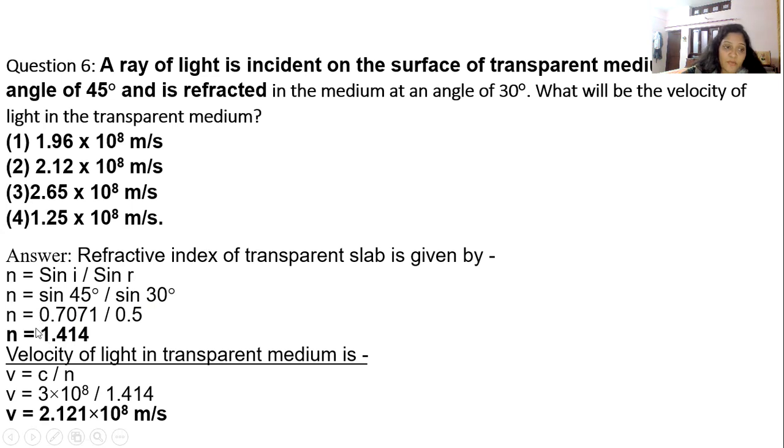We will put this value of n into another formula, c / n. Velocity in air divided by refractive index. 3 × 10⁸ / 1.414. Answer is 2.121 × 10⁸ m/s.